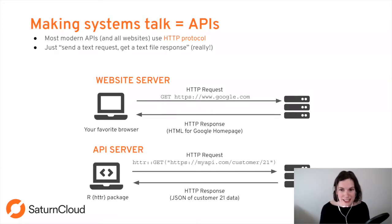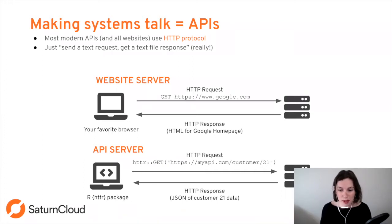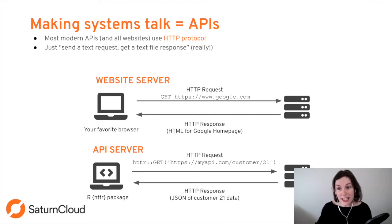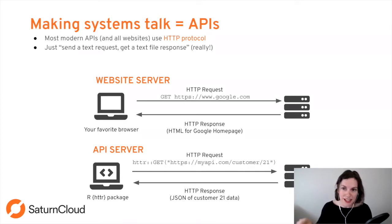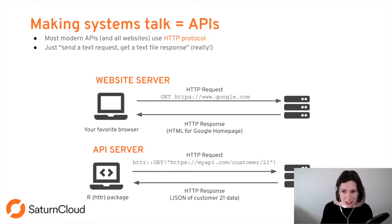An API server is basically the same idea, but instead of your browser sending the GET request, your computer sends it. In R, you can use the httr package. You're doing the exact same thing your browser does when you go to a web page, but the server — say, myapi.com/customer/21 — will say: I know you want customer 21 data, so instead of sending back HTML, I'll send back a JSON blob with the customer's age and name. That's what an API is.